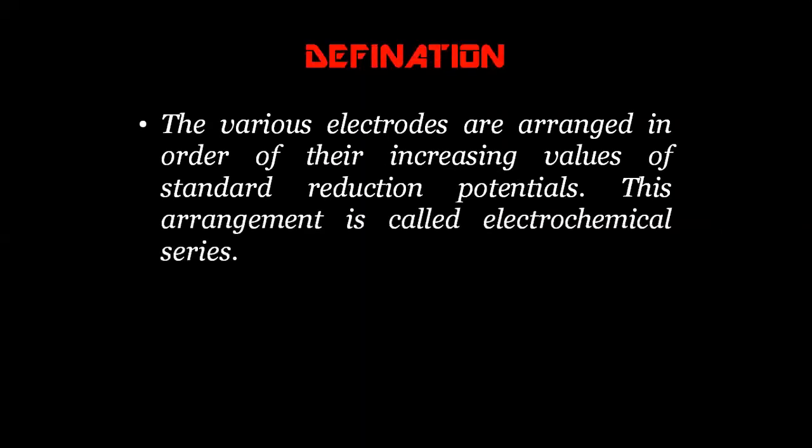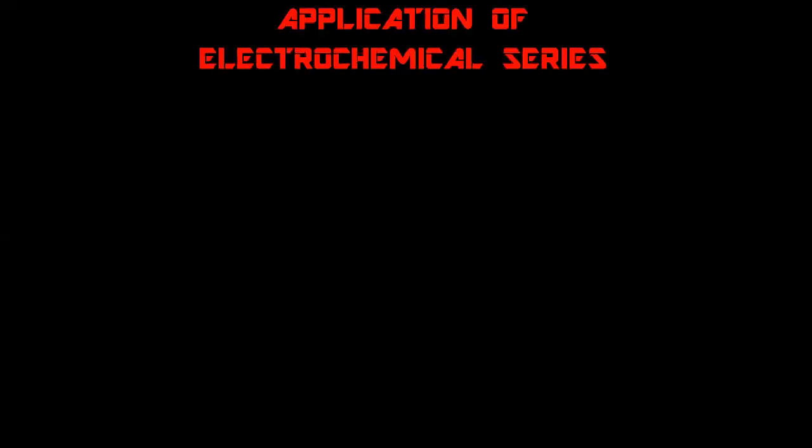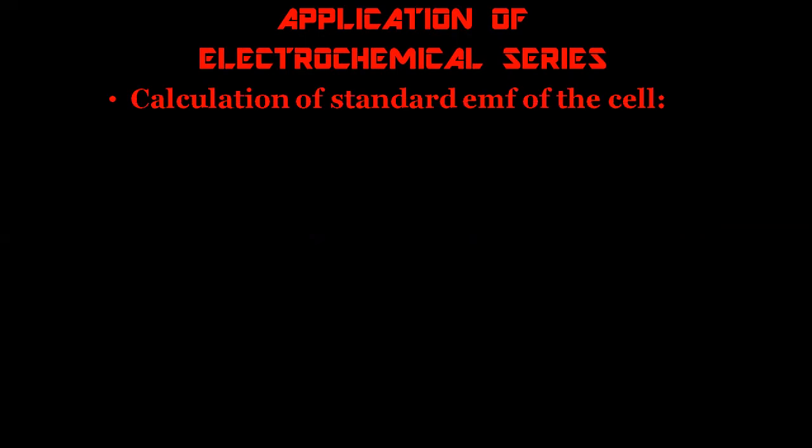Let us start with the definition. The various electrodes are arranged in order of their increasing values of standard reduction potential — this arrangement is nothing but the electrochemical series. Now let us go for the first application, which is the calculation of standard EMF of the cell. We can calculate the standard EMF of a particular cell with the help of these values.